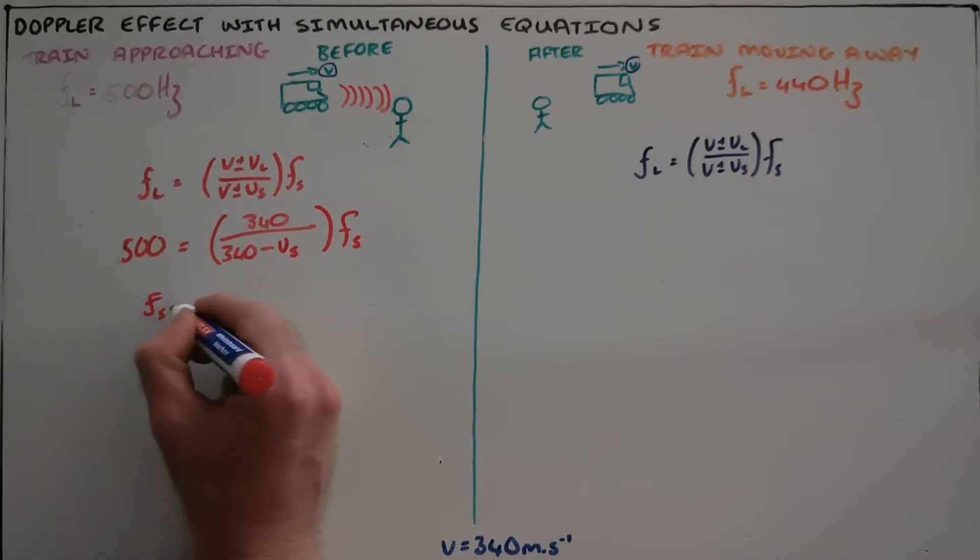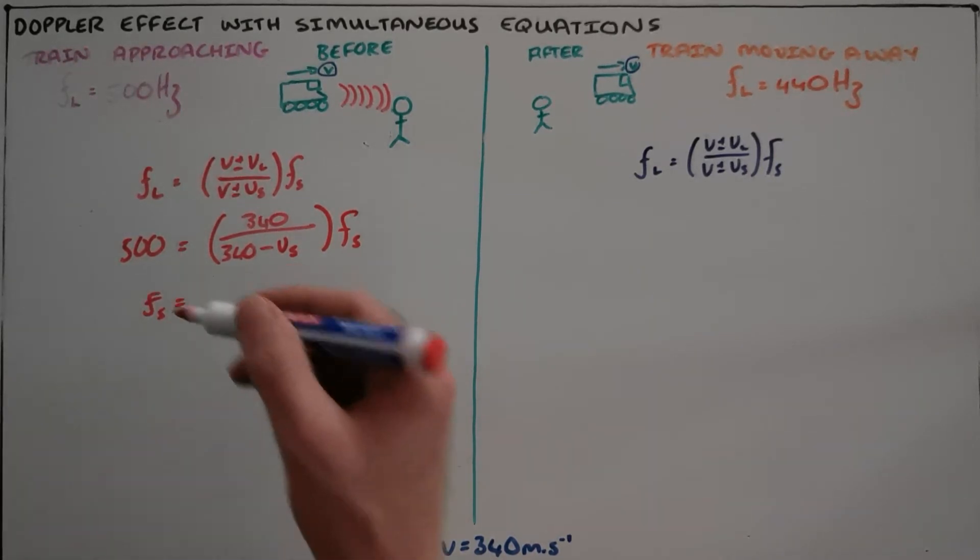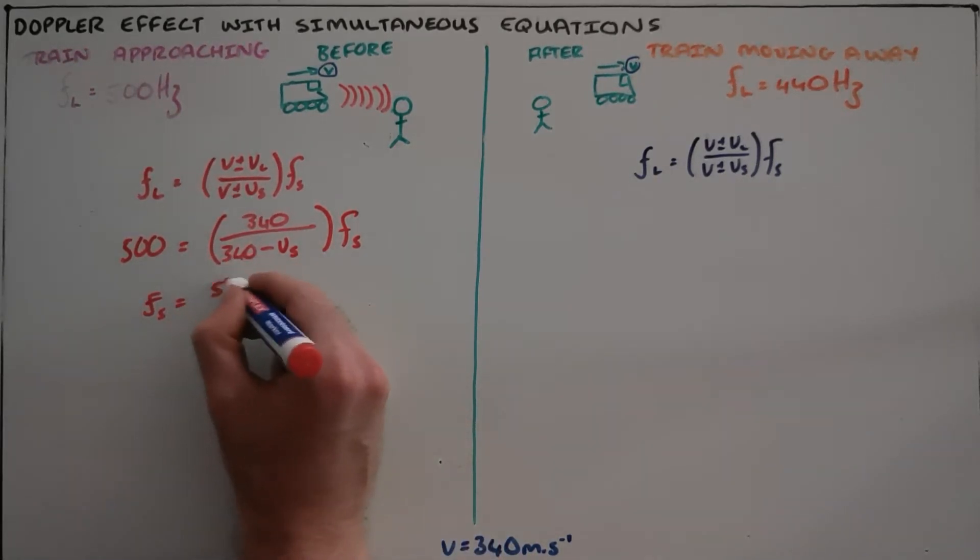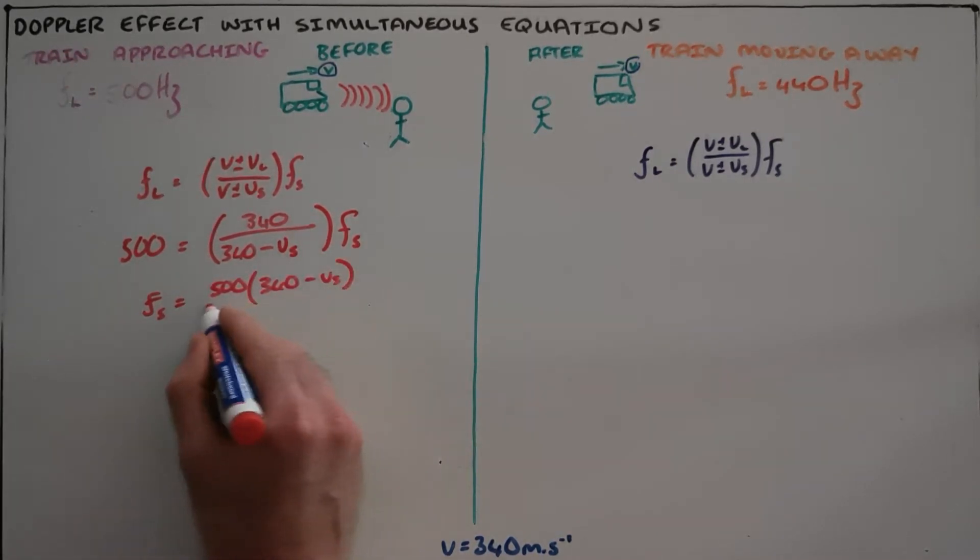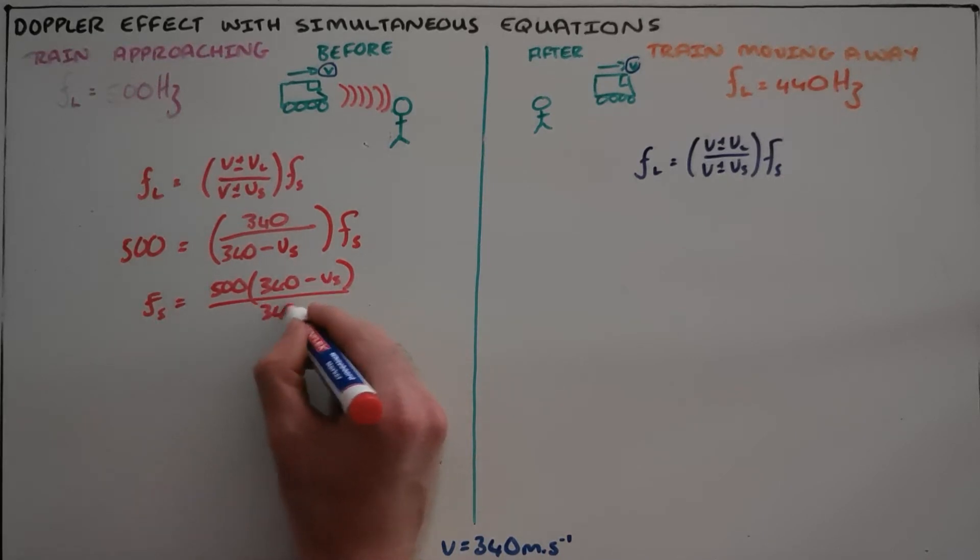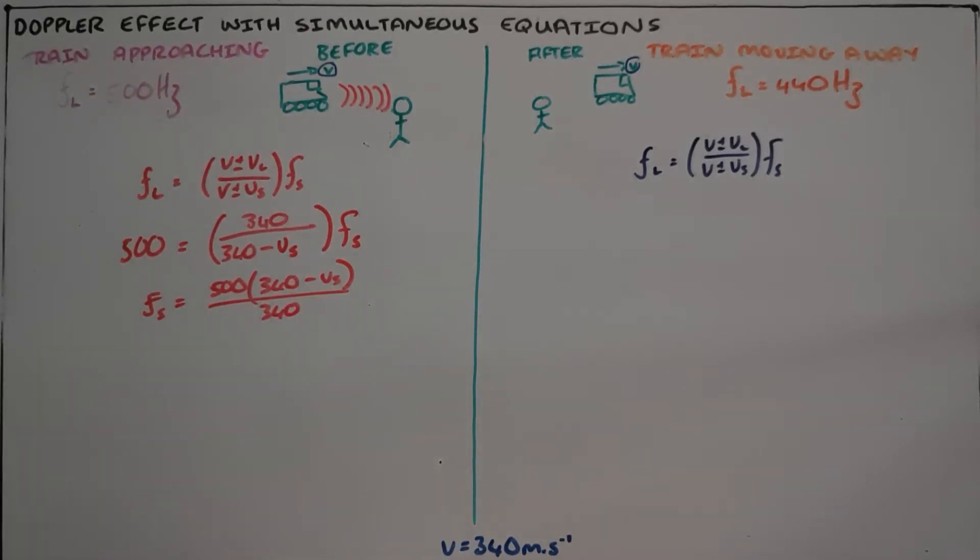We can then rewrite this in terms of the frequency of the source, and that then comes out as fs = 500 times (340 - vs) over 340. And that's as far as we can go—we have two unknowns there.